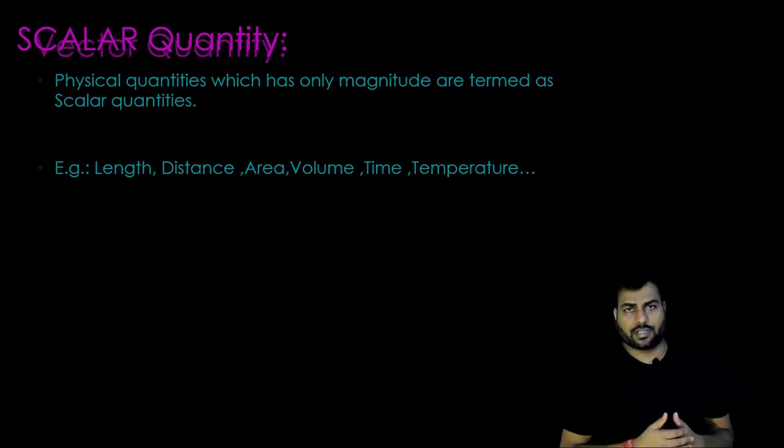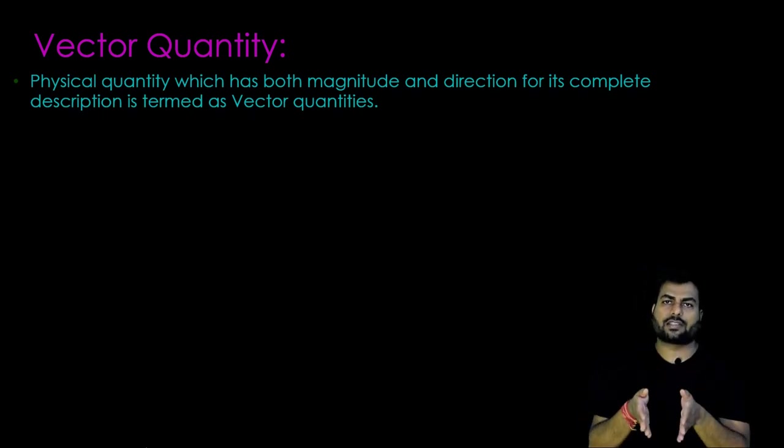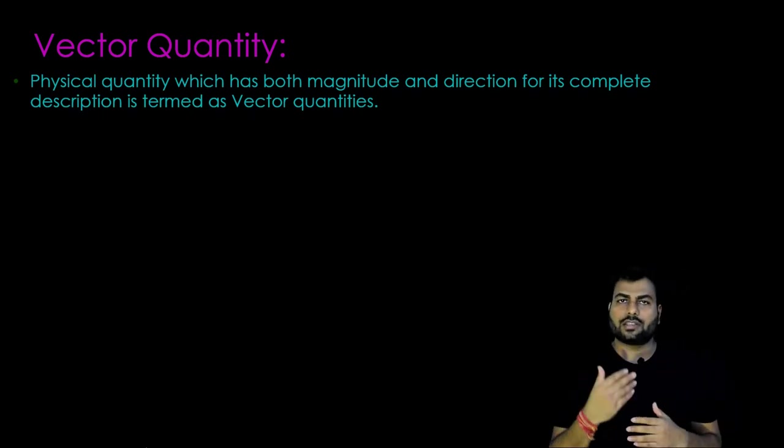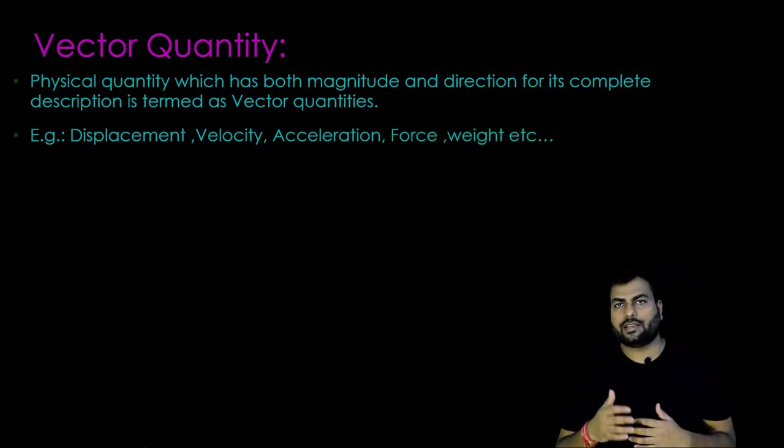Talking about vector quantity. Physical quantity which has both magnitude and direction for its complete description is termed as vector quantity. Examples: displacement, velocity, acceleration, force, weight etc.